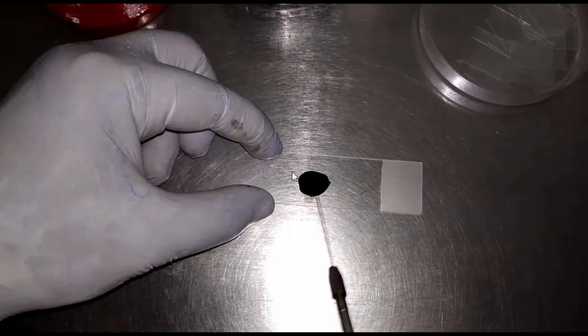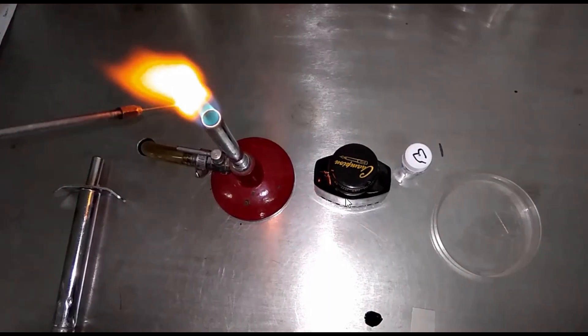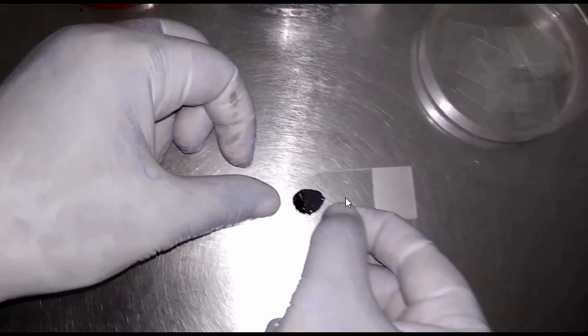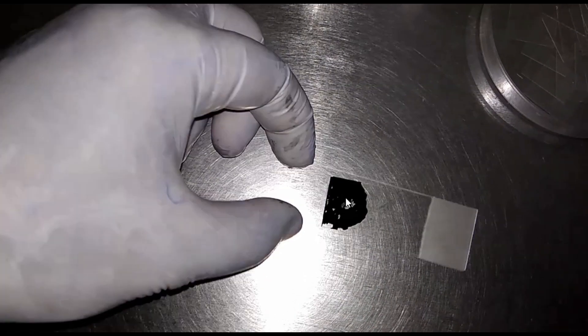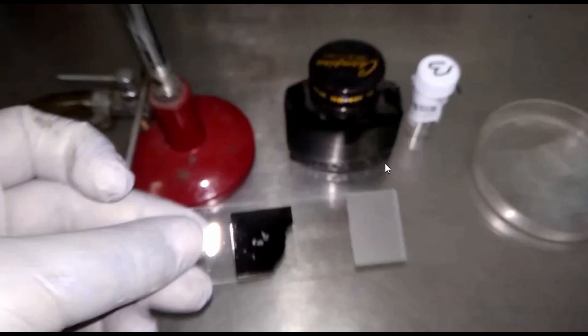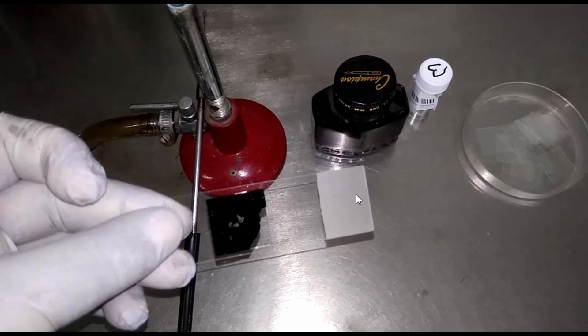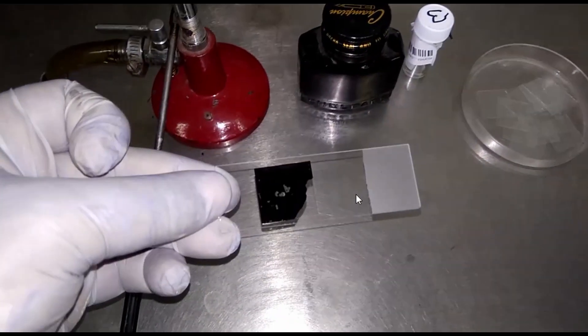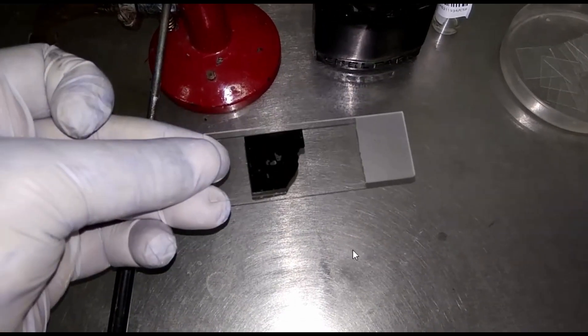Mix properly, now apply the cover slip in this way. We have prepared the India ink preparation. Now let's go to the observation under microscope.